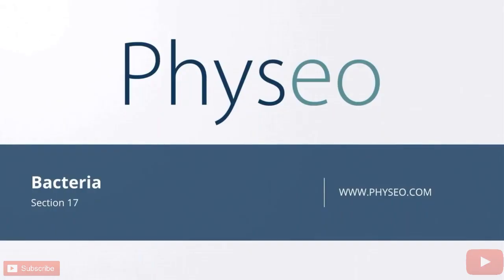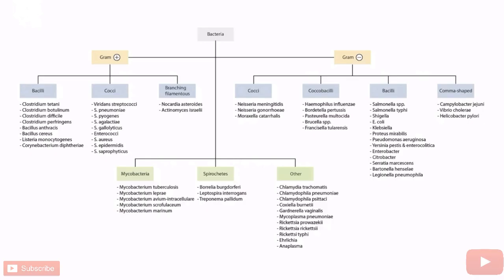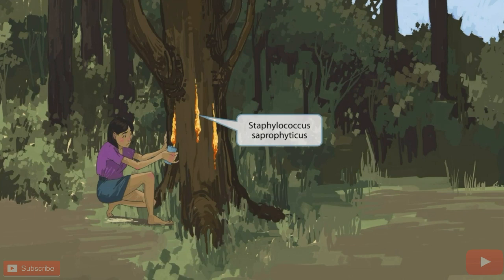Welcome to section 17 of Bacteria. This is our bacteria overview figure. In this video, we'll be discussing Staphylococcus saprophyticus, which you can see right here. This scene takes place in a wooded area next to a large sap tree. Sap sounds kind of like saprophyticus, so we've used a sap tree as our symbol for this organism.